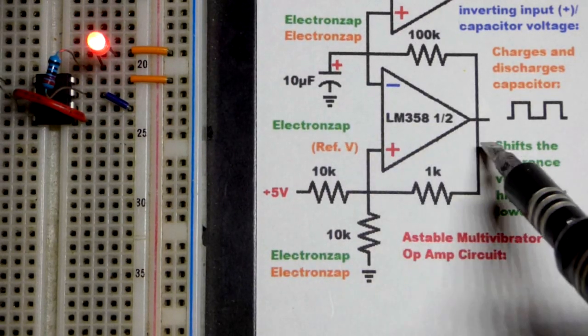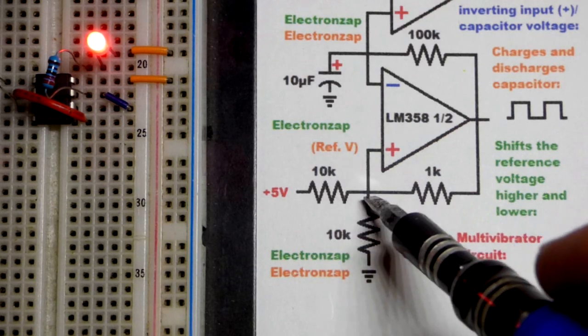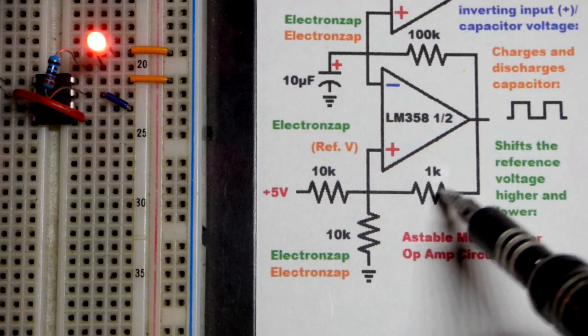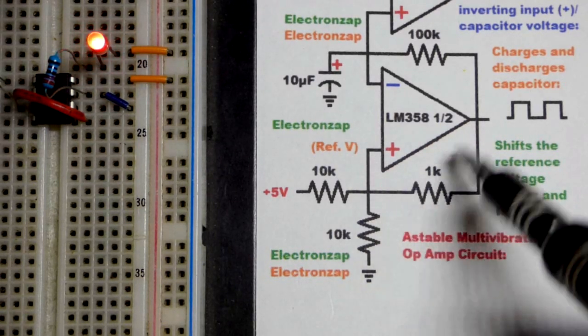When the capacitor passes whatever the voltage we have here, because this will be pulling it down a little bit, that gets higher, this one's lower, sets the output low. And the voltage is going to drop down pretty close to ground because we'll have ground at the output there and a low value resistor there, sucking it down to ground pretty good.